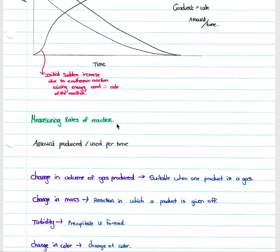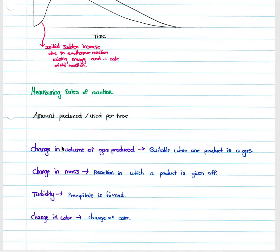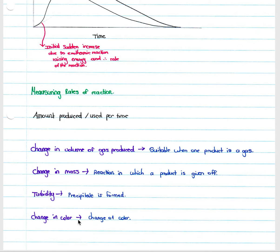Reaction rate can be measured in several ways: for gas-producing reactions, measure the change in volume of gas; when a gaseous product is given off, measure the change in mass; when a precipitate forms, measure the turbidity of the solution; and when there is a colour change, measure that change in colour. A colour change reaction uses a white tile to view the change, though this is hard to plot on a graph as colour has no numerical scale.